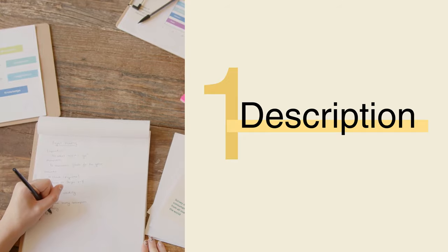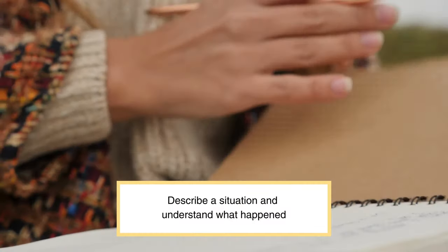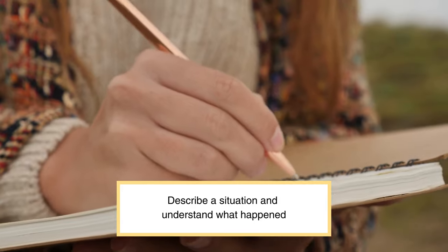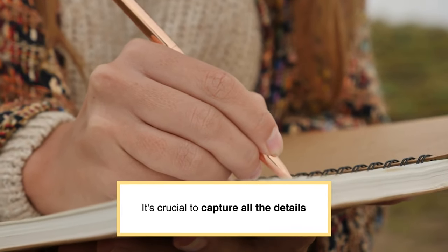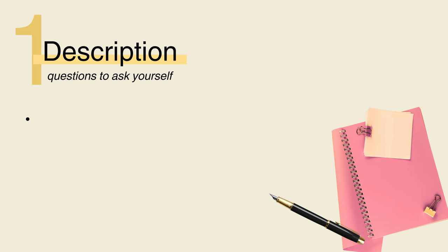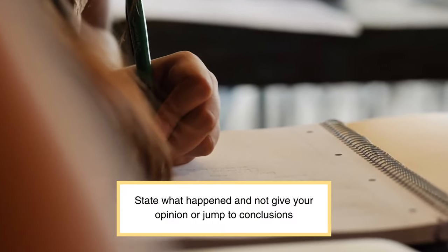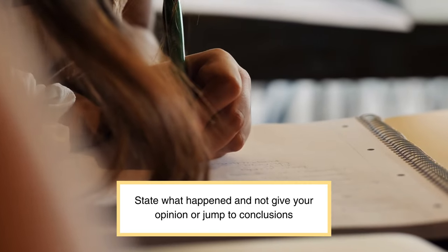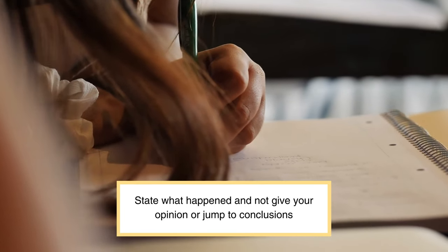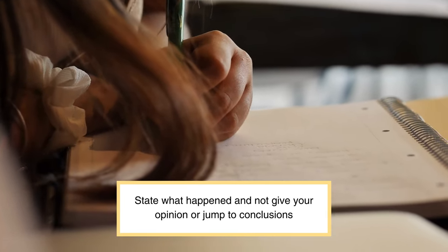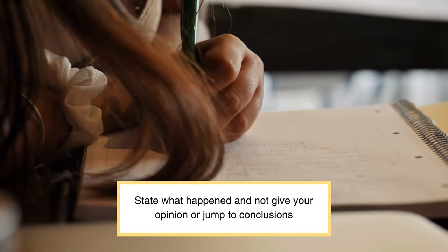The first stage is description. Here, the idea is for you to describe and understand what happened. It's crucial to capture all the details and context surrounding the situation. You may ask yourself: what happened, and what did you do, or how did you react? Were other people involved in this situation? If so, what did they do? What was the outcome? Note that during this stage, you should only state what happened and not give your opinion or jump to conclusions. Try to describe the situation as it unfolded as accurately as possible.